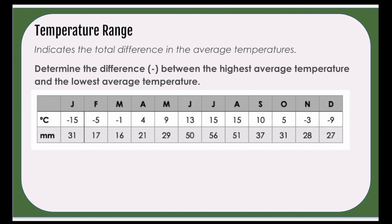In order to do this, you're going to look for the month that has the highest temperature and the month that has the lowest temperature. In our climate information, we will see that July and August have our highest, and January has our lowest. So we're going to take our 15 degrees Celsius, which was our July or August temperature, and subtract from it our negative 15, which is our lowest temperature.